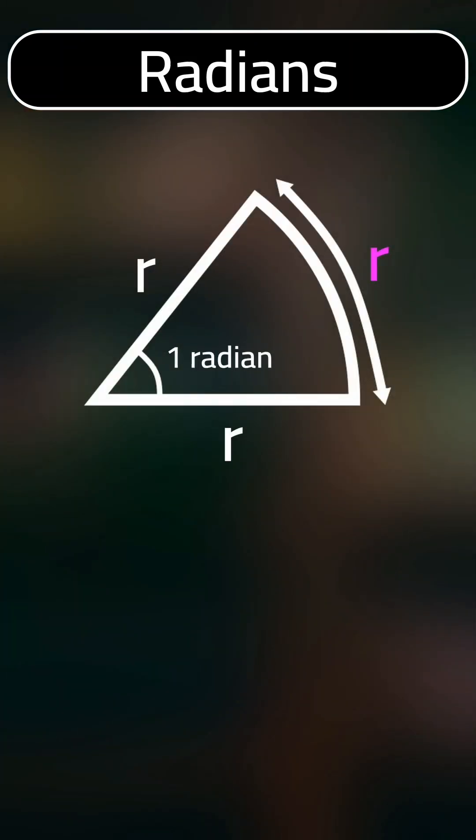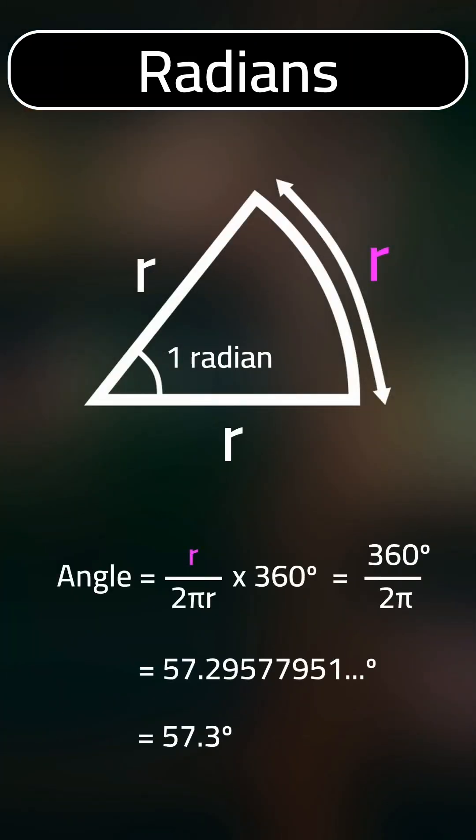One radian is the measure of the angle made when a sector has arc and radius lengths that are equal. This is roughly 57.3 degrees.